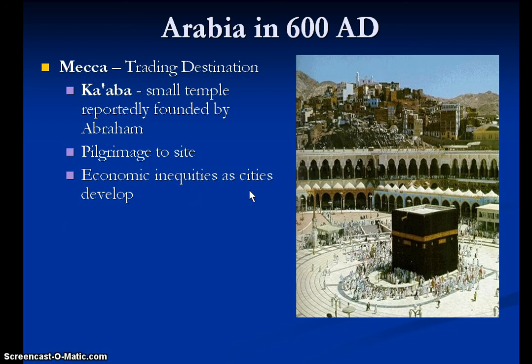Because it's a trade city, you're going to see a lot of economic inequities as this city develops. This is going to have some impacts on the Prophet Muhammad himself, who is going to see this. One of the overriding principles in the Islamic faith is equality — it doesn't matter your hierarchy or your social standing. So that's the first presentation. Remember those two overriding questions, be able to answer them, and move on to part two, when we talk about the Prophet Muhammad.